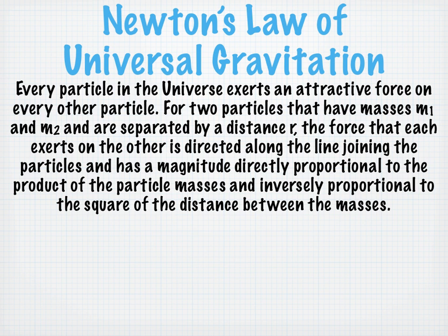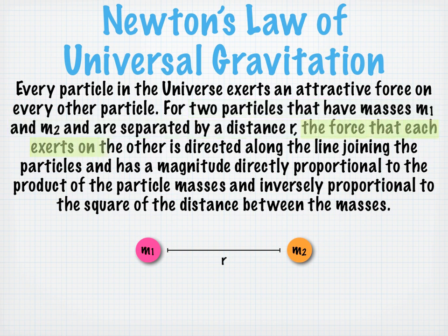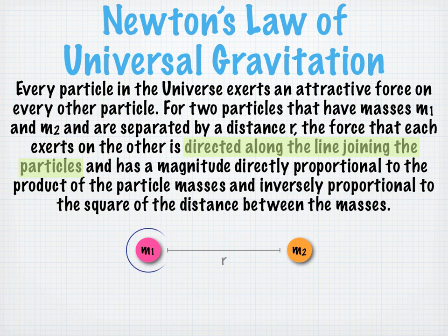Let's try to make some sense out of this. Let's look at two particles that have masses m1 and m2, and are separated by a distance r. Each particle exerts a force on the other. That sounds like Newton's third law, forces in pairs. This force is directed along the line joining the particles. So the attractive force on mass 1 from mass 2 is directed this way, and the attractive force on mass 2 from mass 1 is directed this way.